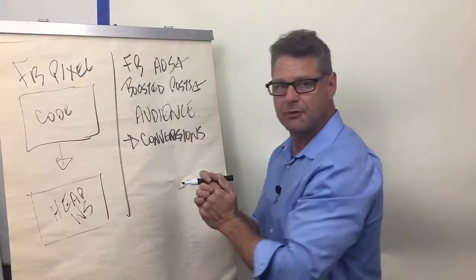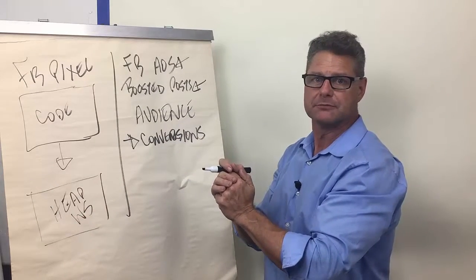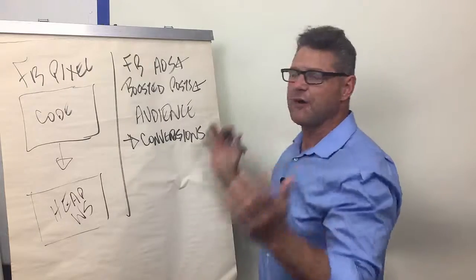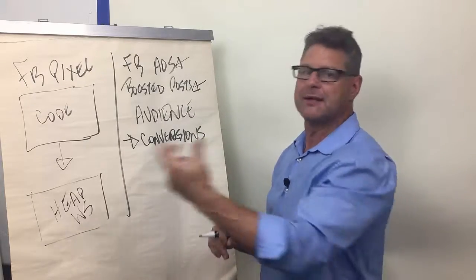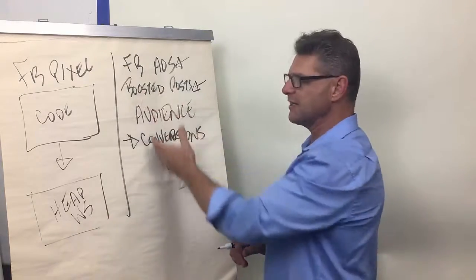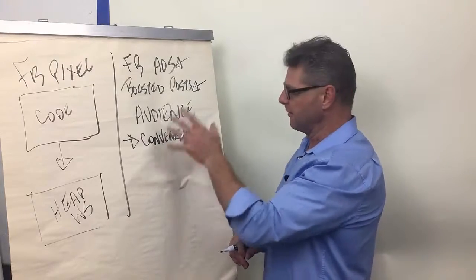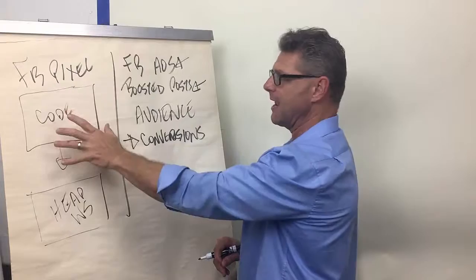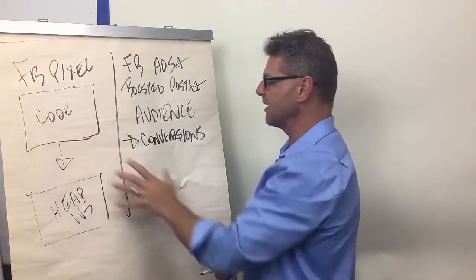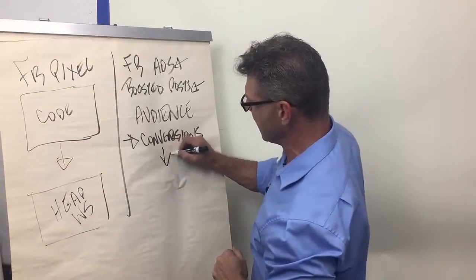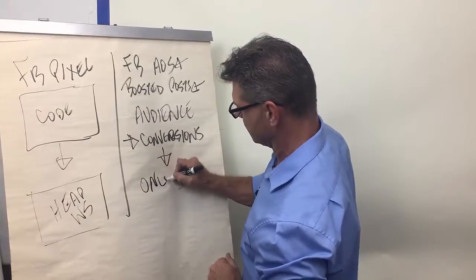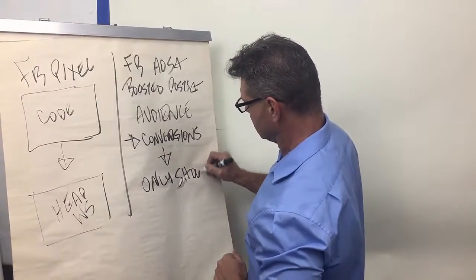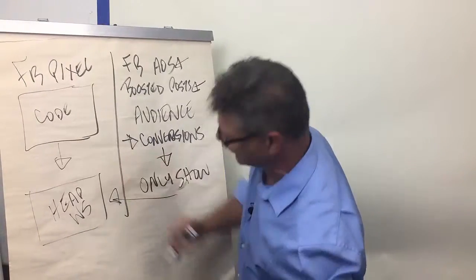So if that guy was on your website on Tuesday afternoon, and then Friday night, Saturday morning, Sunday, he went on his Facebook feed, your Facebook ad will trigger and say this was a conversion from your website, and it will only show it to those people that you chose.